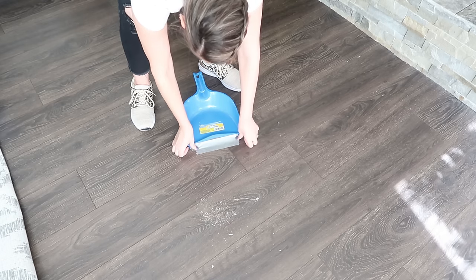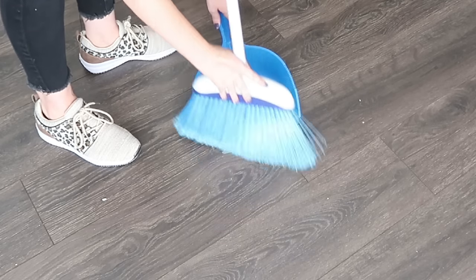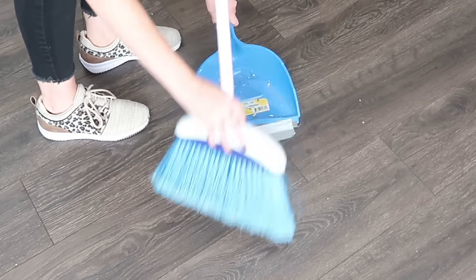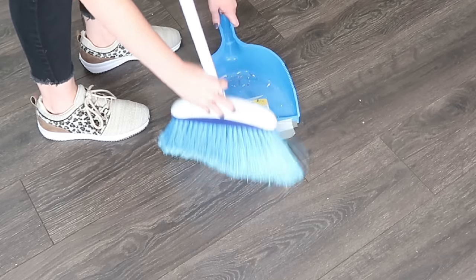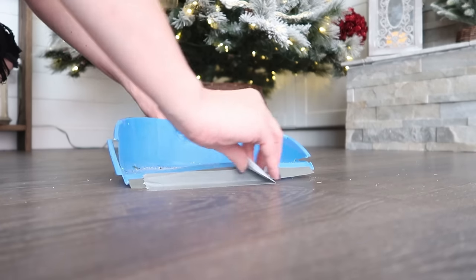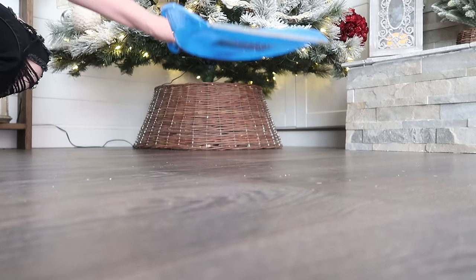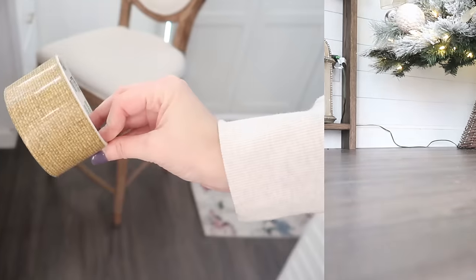You actually take some duct tape and tape your dustpan to the floor. This prevents all the extra dirt from going underneath and it goes right up over the tape and into your dustpan. Then you can remove your tape from the floor and use that duct tape to pick up any of the loose dirt and dust left behind.